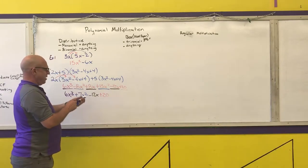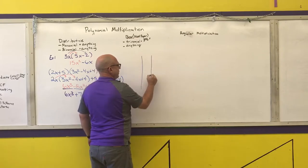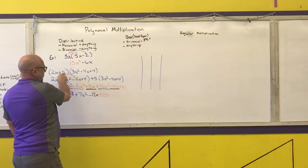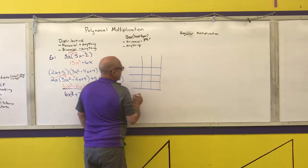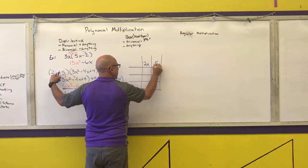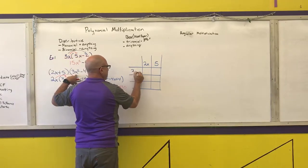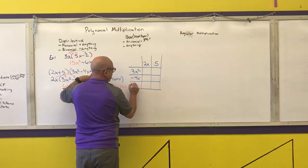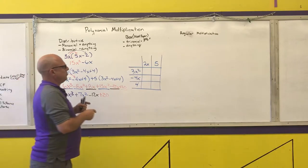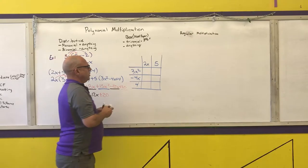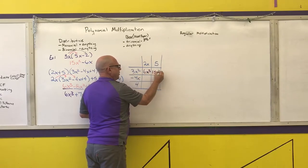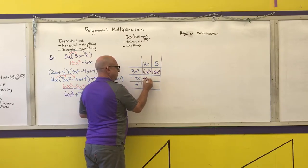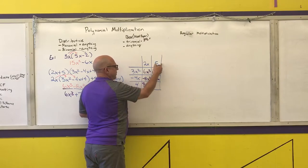Box method — same problem. I'm going to draw a box with two columns and three rows. In the columns I put 2x and 5; in the rows I put 3x², negative 4x, and positive 4. Then I multiply each column by each row: 2x times 3x² is 6x³; 5 times 3x² is 15x²; 2x times negative 4x is negative 8x²; 5 times negative 4x is negative 20x; 2x times 4 is 8x; 5 times 4 is 20.